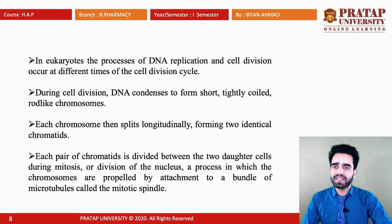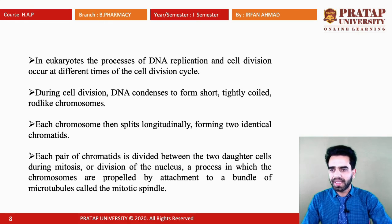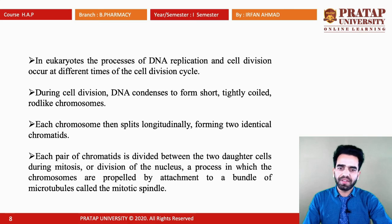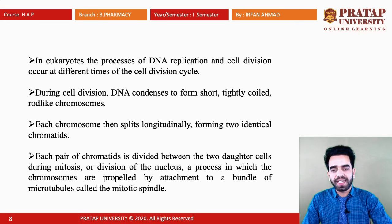In eukaryotes, the process of DNA replication and cell division occur at different times. During cell division, DNA condenses and forms short, tightly coiled, rod-like chromosomes. Each chromosome splits longitudinally to form two identical chromatids, and each pair is then divided between two daughter cells during mitosis — a division of the nucleus in which chromosomes are propelled by attachment to bundles of microtubules called mitotic spindles.